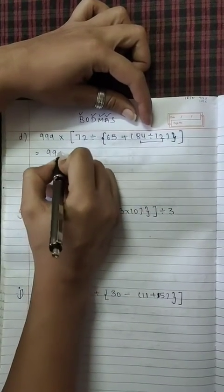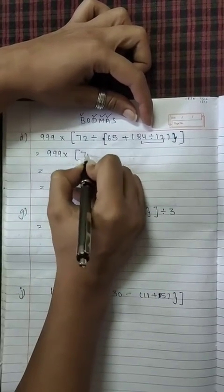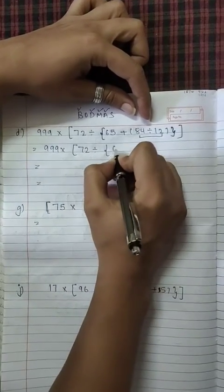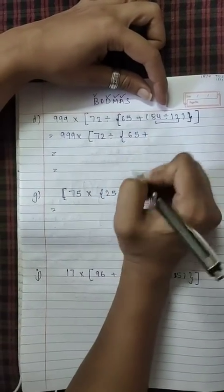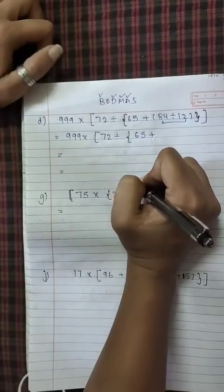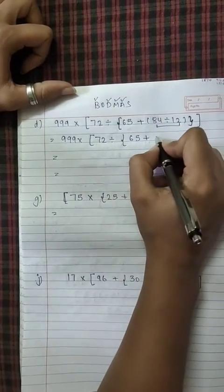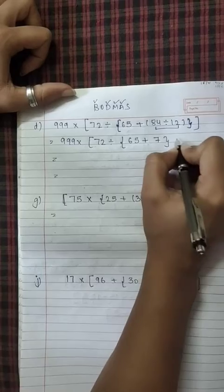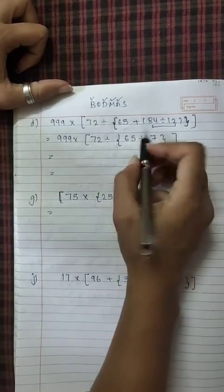Means the rest of the question will come as it is. 72 divided by 65 plus, now 84 divided by 12. In the table of 12, where does 84 go? 12, 7's are 84. Square, round bracket is solved.